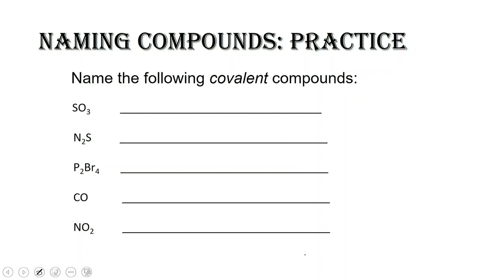Let's practice one of these together — I'll do the easiest one with you. We have CO. You take the element symbol, find it on the periodic table. We've got carbon, and because there's only one carbon we don't put 'mono' at the beginning. We've got oxygen as our second element, and there's one of them, so we say 'monoxide'.